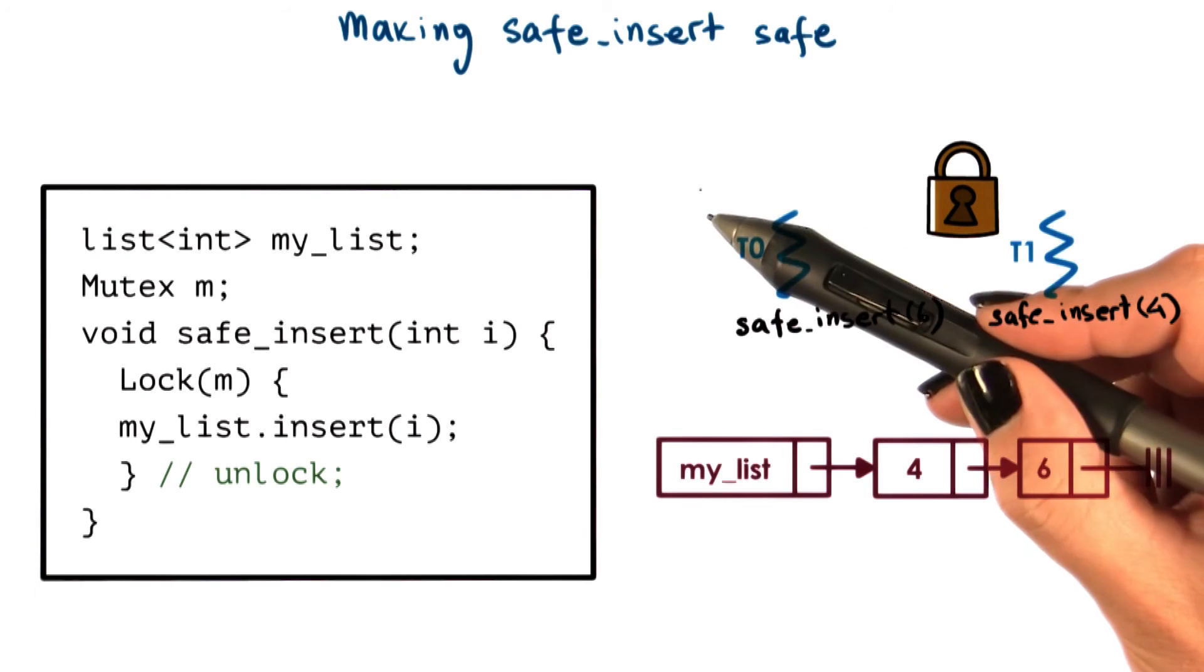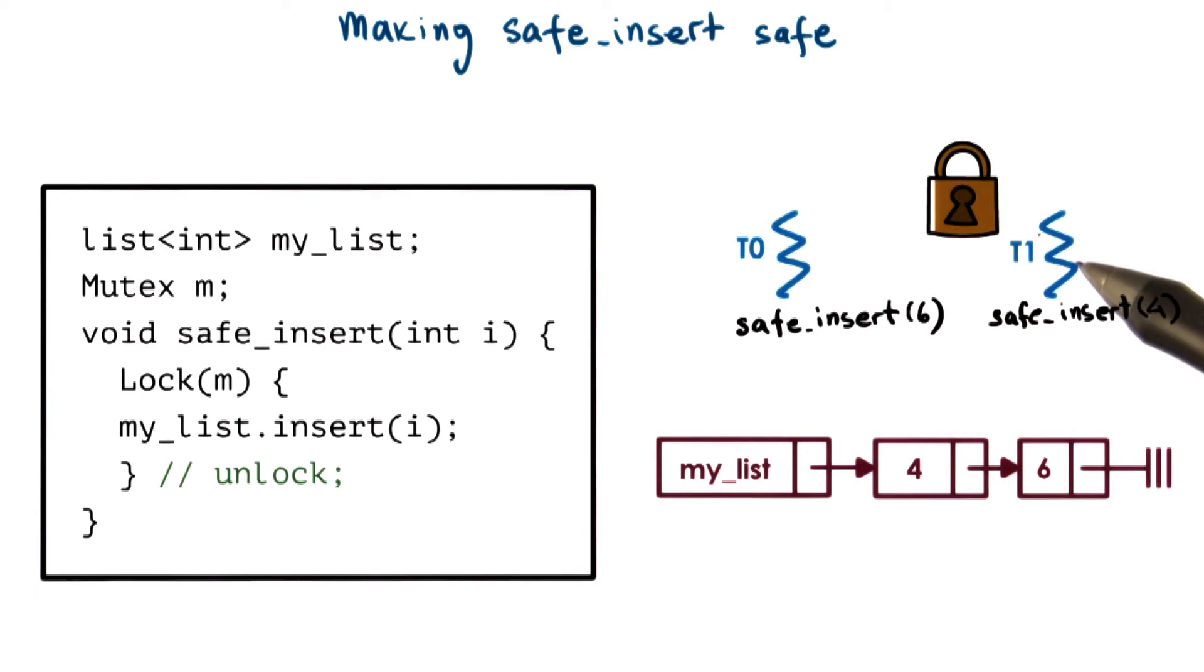At some later point, t0 will release the lock, t1 will acquire the lock, and then t1 will be able to insert its element onto the front of the list.